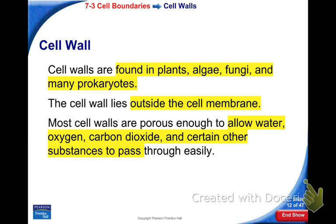Now, all cells have a cell membrane. Not all cells have cell walls, though. Plant cells have cell walls, but algae cells, fungus, and many prokaryotic cells — which are bacteria — many bacterial cells also have a cell wall.